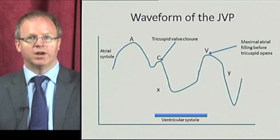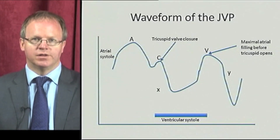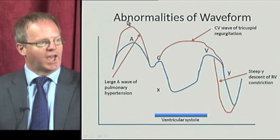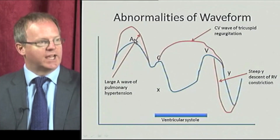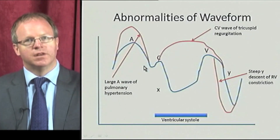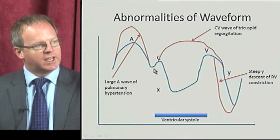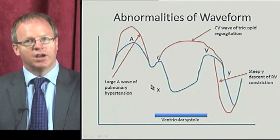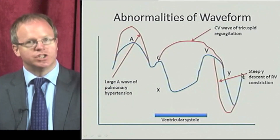Examples of alteration in the waveform occur in various situations. In pulmonary hypertension, you get accentuation of the A wave, and this will lead to a very large and marked X descent. In tricuspid regurgitation, you get the regurgitant wave connecting together the C point and the V wave, giving you a so-called CV wave. And in right ventricular constriction, you get a very steep, wide ascent, as shown here.